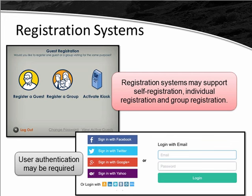User authentication provides two benefits: first, it ensures guests are registered before getting on the network, giving you better security. Second, if you're a retail outlet — a coffee shop, restaurant, or bookstore — it enables you to market to those users afterward. So the registration and authentication system provides both security and potential business value.